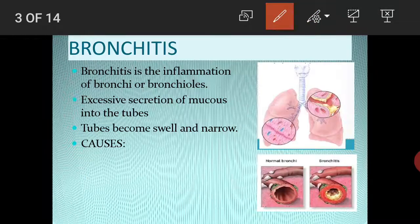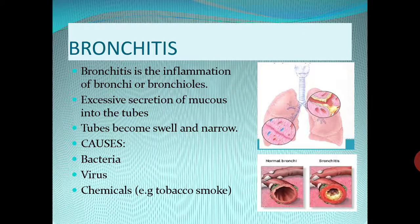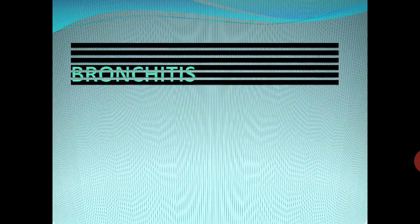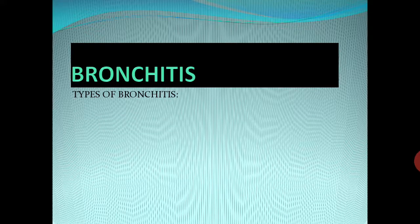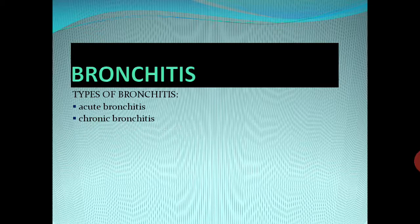Bronchitis is caused by bacteria, viruses, and chemicals — for example, tobacco smoke. There are two types of bronchitis: acute bronchitis and chronic bronchitis. In acute bronchitis, the patient recovers in about two weeks with no permanent damage.